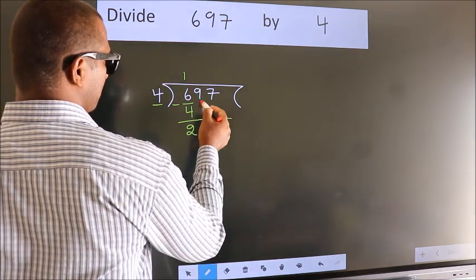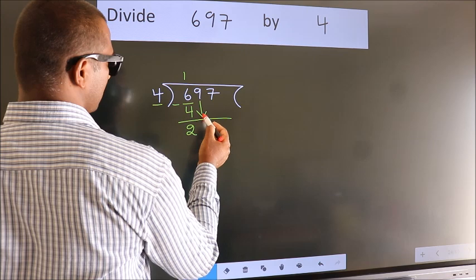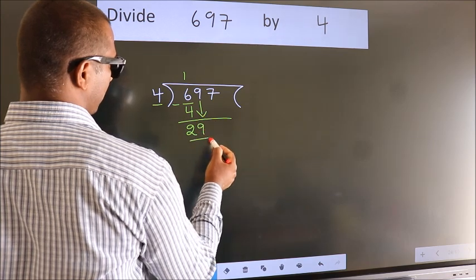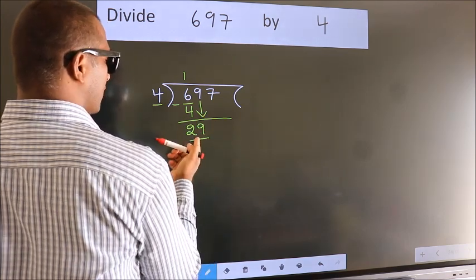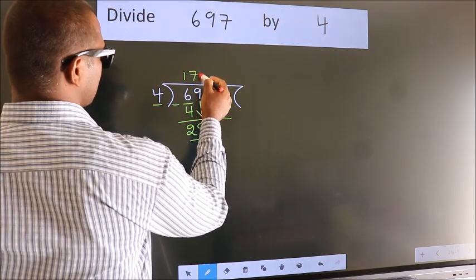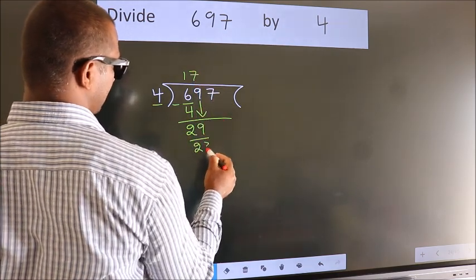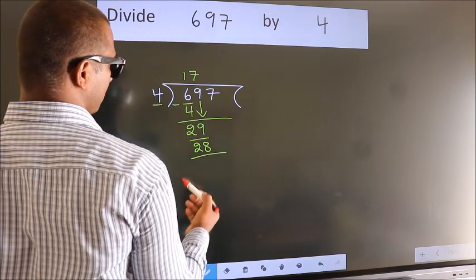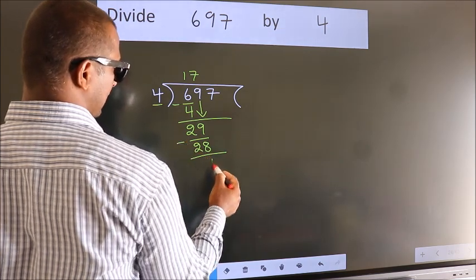After this, bring down the beside number, so 9 down, so 29. A number close to 29 in 4 table is 4 sevens, 28. Now we subtract, we get 1.